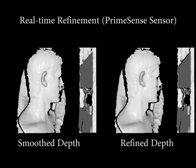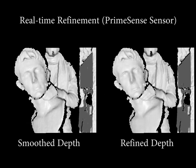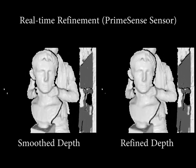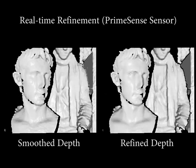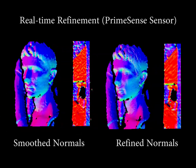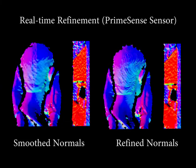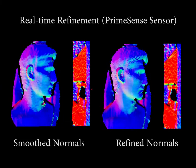Compared to the smooth depth, our method captures much richer detail. Note the detail on the eye of the Augustus. This is reaffirmed when rendering the normal map of the depth.